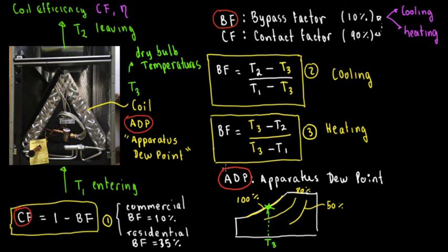Just to summarize: what we're seeing here is the coil efficiency, which is related to the bypass factor and the apparatus dew point. I hope you enjoyed this video — if you did, hit the like button and subscribe. Thanks so much.